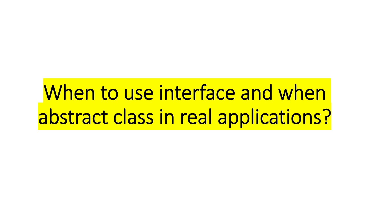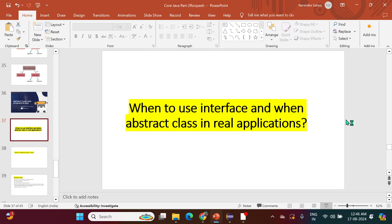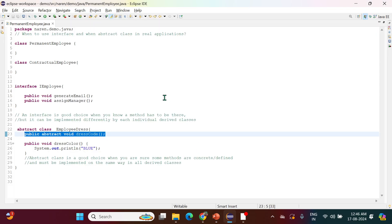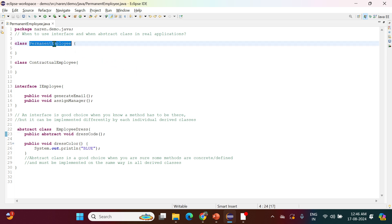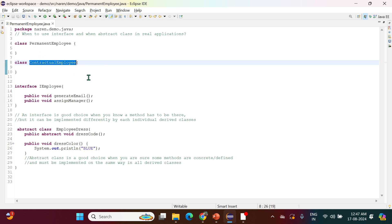We need to understand at what scenario we'll use interface and at what scenario we'll use abstract class. Both interface and abstract class are used to implement data abstraction. To make you understand, I will give you a simple example. Let's say we have two types of employees: a permanent employee and a contractual employee — two classes.